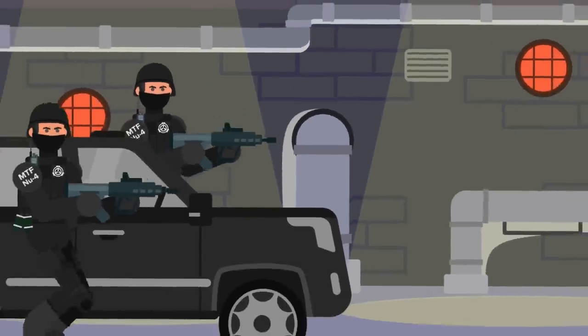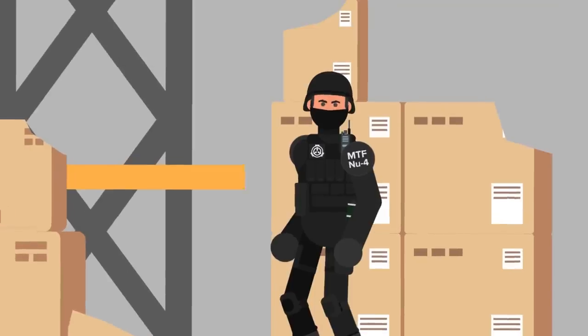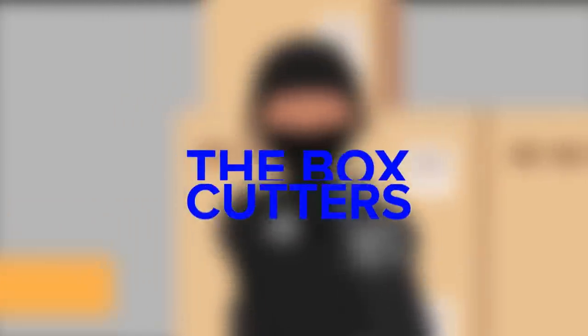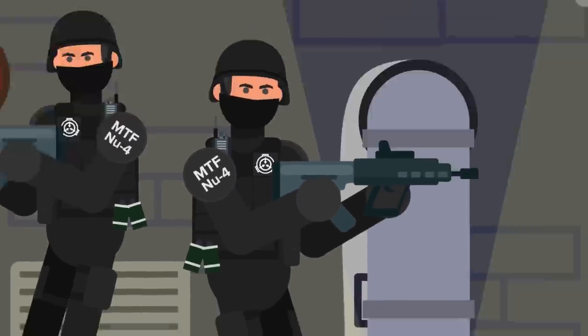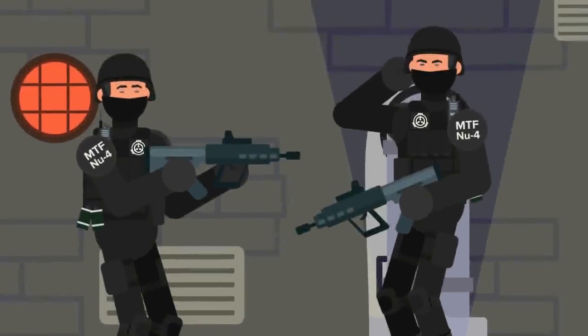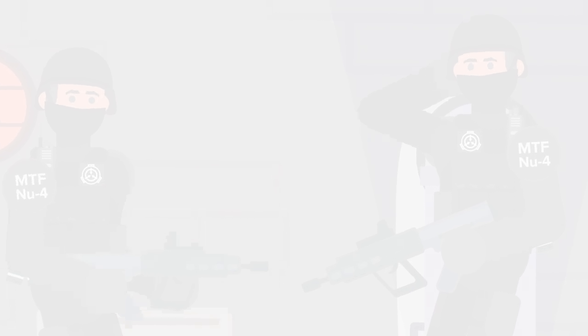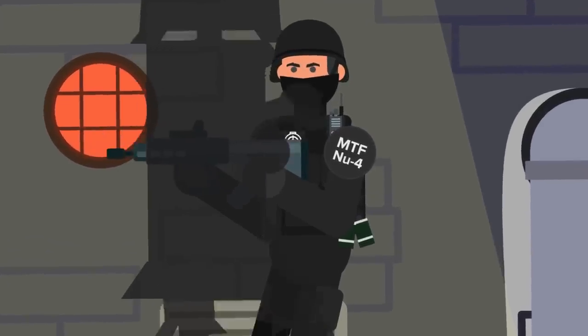A new mobile task force was formed to secure the creature, MTF-Nu-4, also known as the Box Cutters. What they didn't expect was that when they finally engaged the beast, it was no larger than a human child. It wasn't some huge tunnel-dwelling nightmare, even after all these decades.